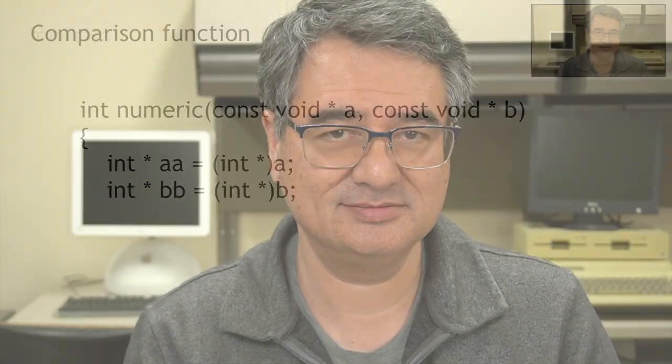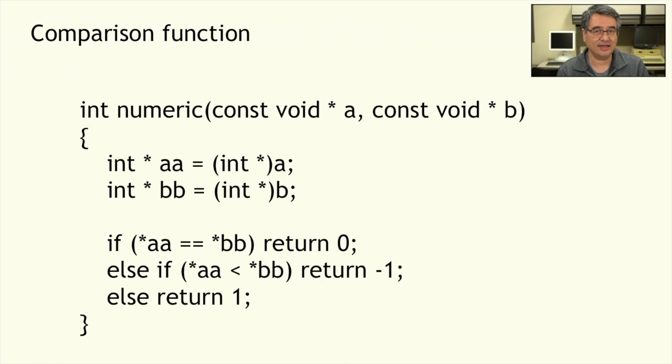The comparison function gets two elements, you need to cast them to be the correct type, then look at what the first one is pointing to and what the second one is pointing to and compare them. If they're equal, return 0. If the first is less than the second, return a negative number; return a positive number if the opposite is true. So the function casts A and B to be integer pointers — I've called the variables AA and BB. Then if what AA points to equals what BB points to, return 0. If AA's value is less than BB's, return a negative number; otherwise return a positive number.